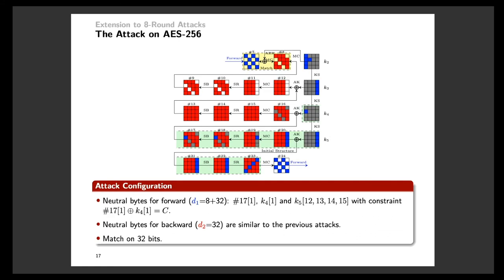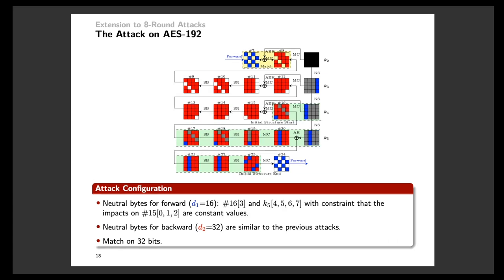Since the key schedule of AES-256 has slow diffusion, it is able to satisfy the above three constraints. As a result, the forward neutral bytes could have at most 40-bit freedom degrees, and both the backward and filtering power are 32 bits. Finally, the extension also applies to AES-192. The neutral bytes for forward include one byte in state 16 and one column in K5. Unlike the constraint mentioned just now, we relax the constraint on the third byte of state 15, because this unknown byte will have no influence on the following backward computation. The rest of the configuration is similar to the previous attack.